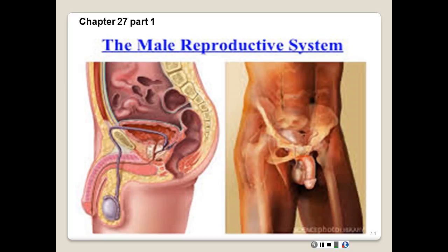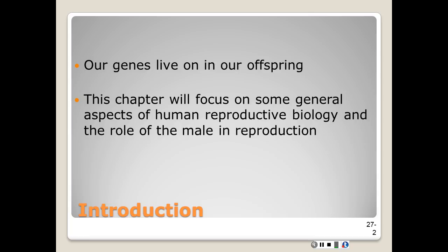Here we're going to be looking at the male reproductive system. Our genes live on in other offspring, so genes will be passed on from the parent to the child. This chapter we're going to focus just on the general aspect of human reproductive biology and the role of the male in reproduction.